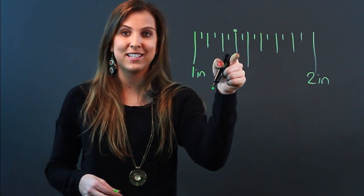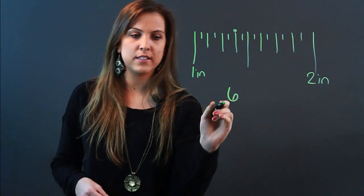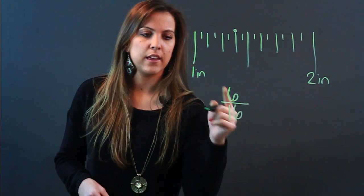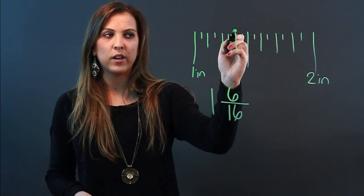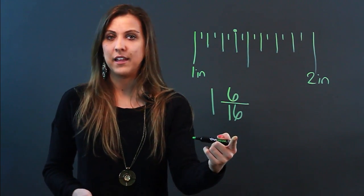So that's one, two, three, four, five, six. All you're going to do is put six over sixteen and then there was one inch before it so we're doing one like that. So if my object ends right here it measured to be one and six sixteenths.